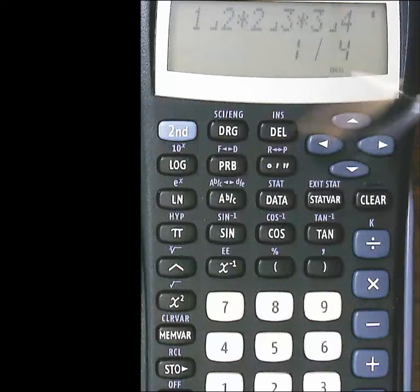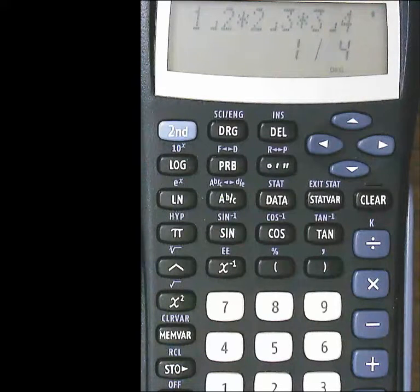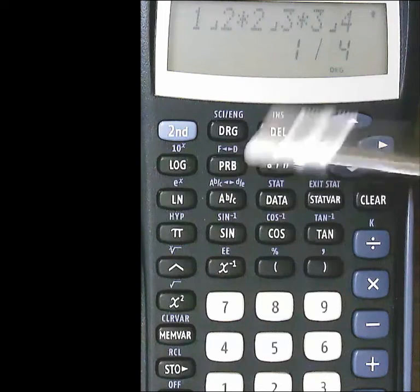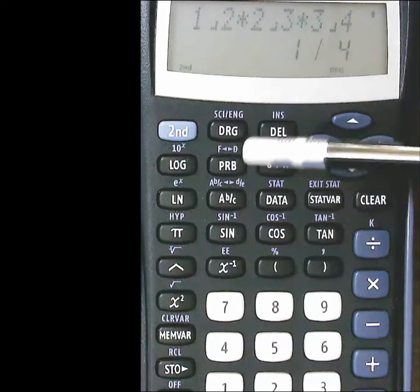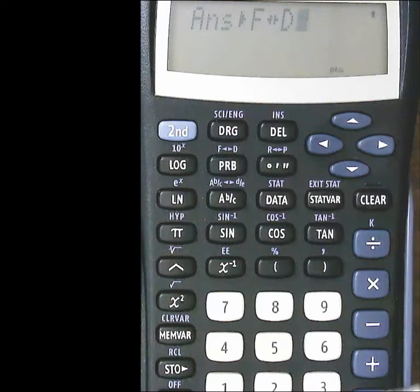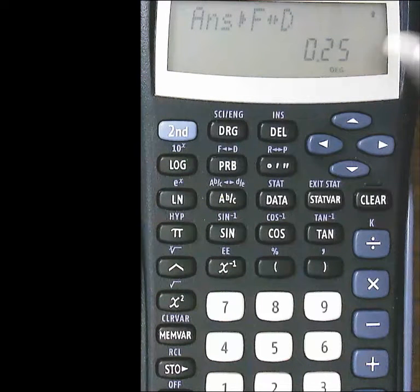So say I want to take this 1 fourth, I could either type in 1 fourth and then use that key there. Or since it's already there as my answer, I could just do 2nd, because it's up above the button. And then hit that. And then equals, it changes it into a decimal.